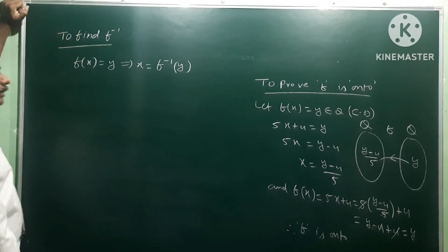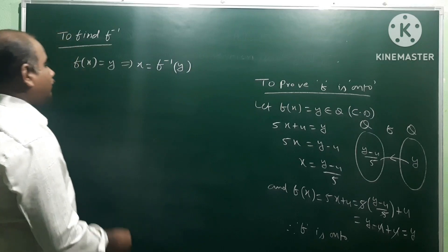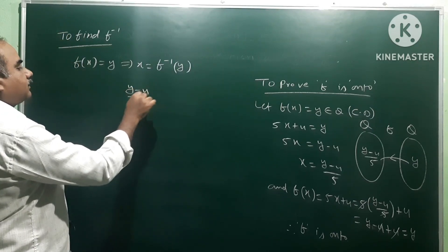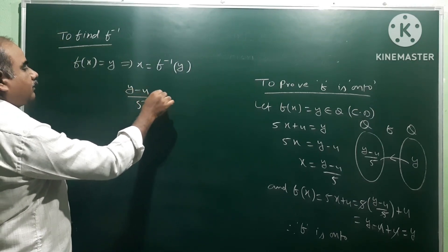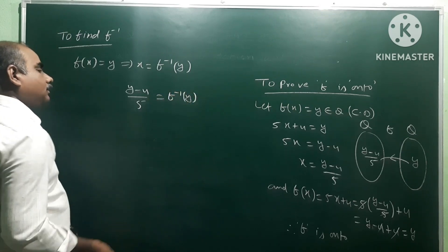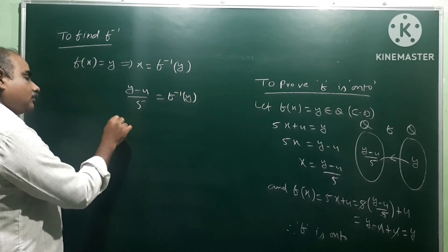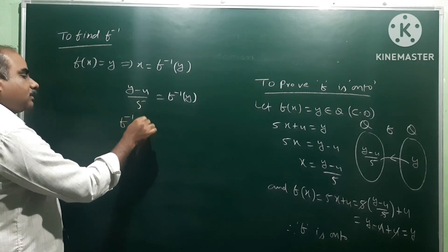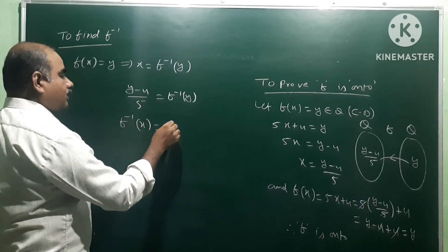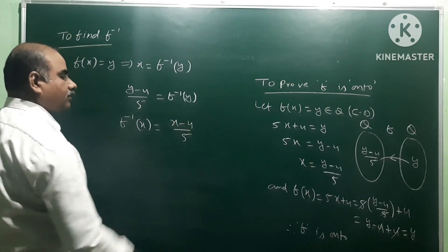Since x = (y - 4) / 5, this means f inverse of y = (y - 4) / 5. Replacing y with x, we get f inverse of x = (x - 4) / 5.